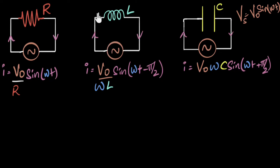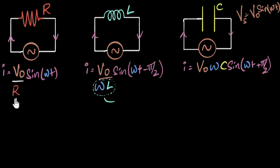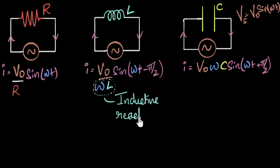Let's begin with an inductive circuit. How much opposition does an inductor provide to a current? Looking at the equation, I see that I is equal to V₀ divided by something, and that something should represent the opposition — because if this number increases, the current will decrease. We give a name to this opposition. We won't call it resistance because resistance has a specific meaning. Instead, we call it reactance, and because this is due to an inductor, we call it inductive reactance, denoted by XL. The opposition provided by the inductor is the product of omega and L.